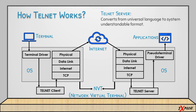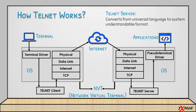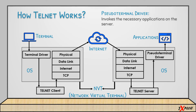After that, the data is passed to the telnet server. The telnet server performs the reverse operation of the telnet client — it converts the universal language information back into a system-understandable language. Finally, it is forwarded to a pseudo terminal driver, which invokes applications based on the user input. For example, if the user has requested to delete a file, that will be done through the pseudo terminal driver. This is the basic operation of telnet.